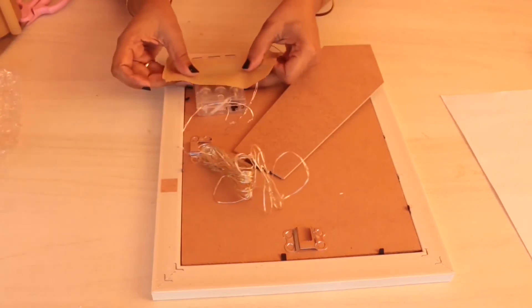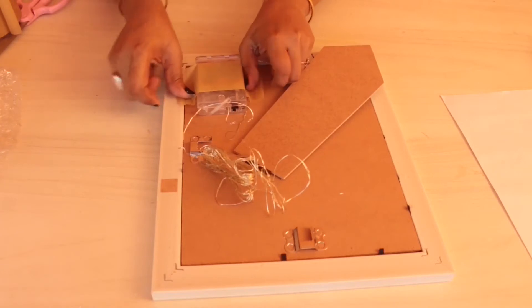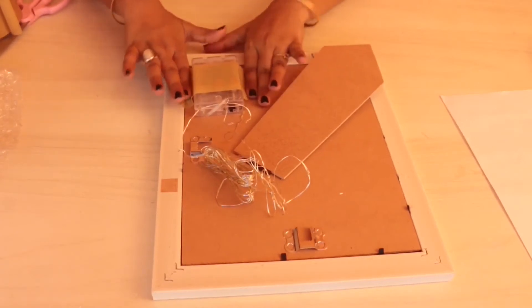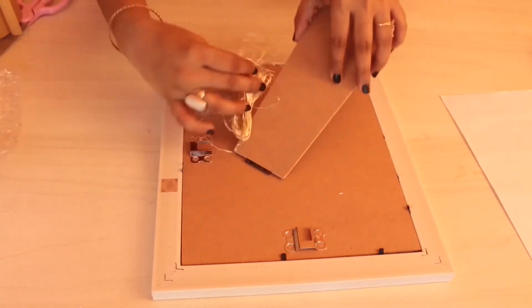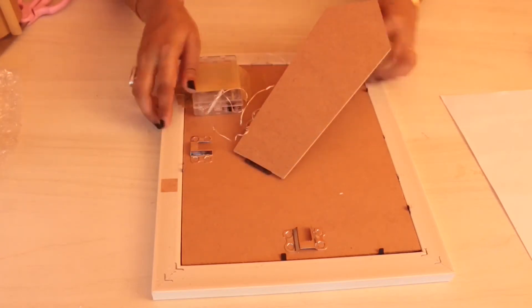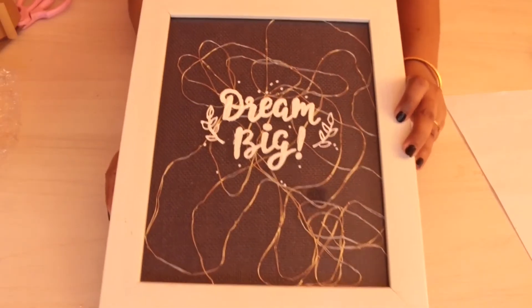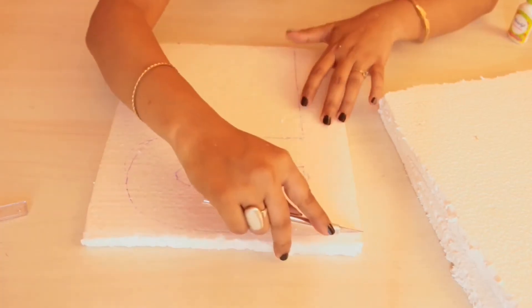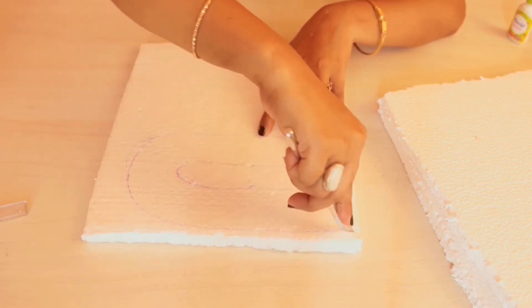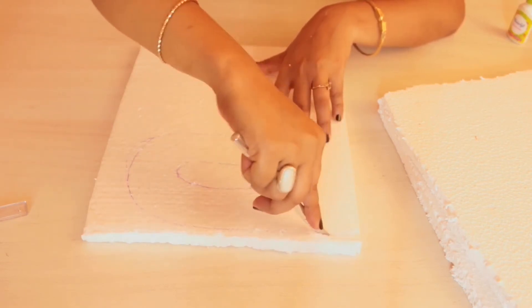Attach this box with cello tape and the frame is ready. In the next one I will be using thermocol cut into any letter of your choice. So I'm using a P.